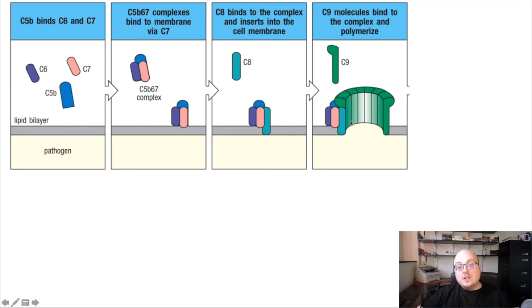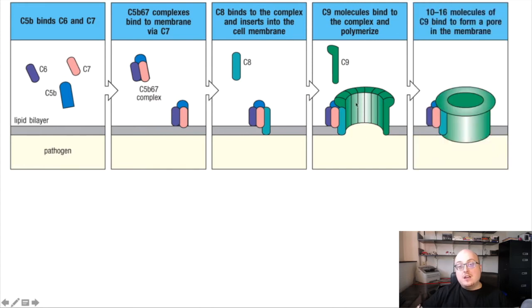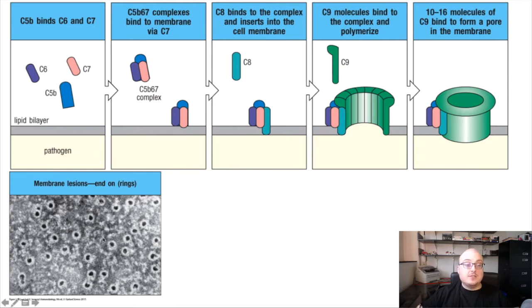And then C8 is going to recruit multiple copies of C9. And C9 polymerizes to begin to form this round pore structure. And in fact, 10 to 16 molecules of C9 ultimately come together to form, it kind of looks like one of those pipes from Mario. Same idea, right? Water now from the outside of the cell is going to be able to flow into the inside of the cell, ultimately causing its lysis.